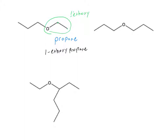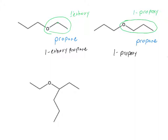In our second example, we have carbon chains of three and three coming off either side of our oxygen. It doesn't matter which we pick — we're just going to pick one to be our main chain and one to be our substituent. In either case, our main chain is going to be propane, and our substituent is going to be propoxy. Either way that we choose, that propoxy group would be coming off of the first carbon, giving us a final name of 1-propoxypropane.